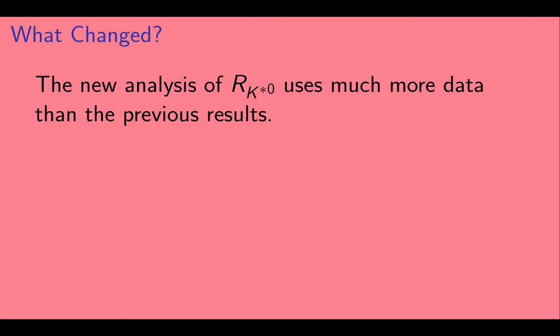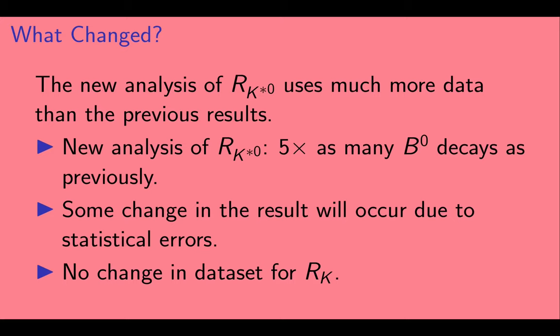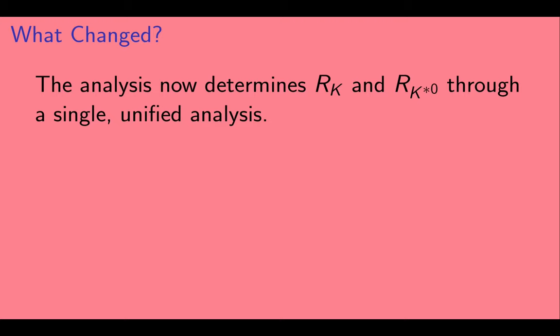OK. Next, the new analysis of RK star uses much more data than the previous analysis did. Basically, now they're looking at about five times as many B decays as they did before. This will change the results somewhat due to statistical errors. On the other hand, there was no change in the dataset for RK.